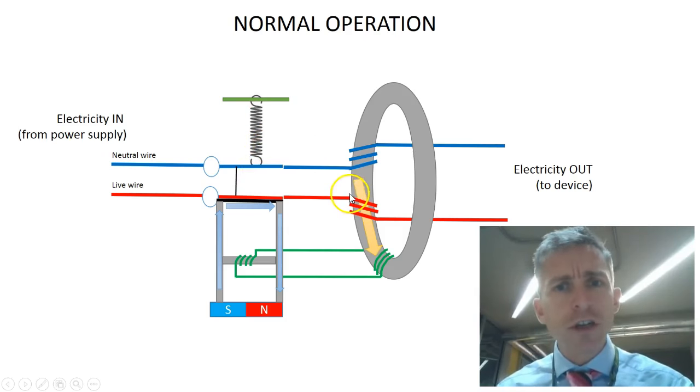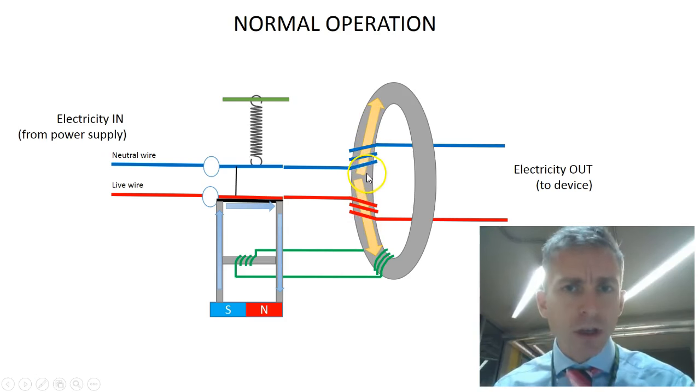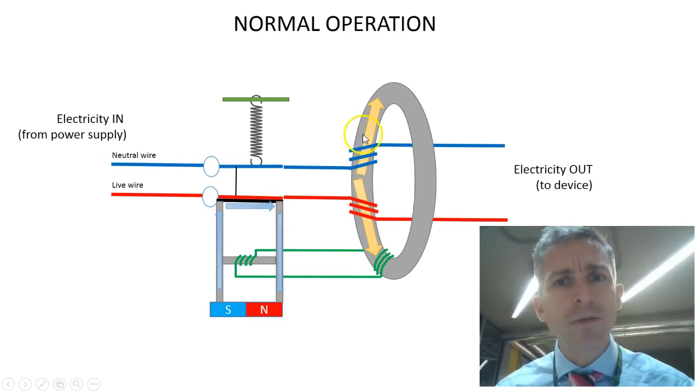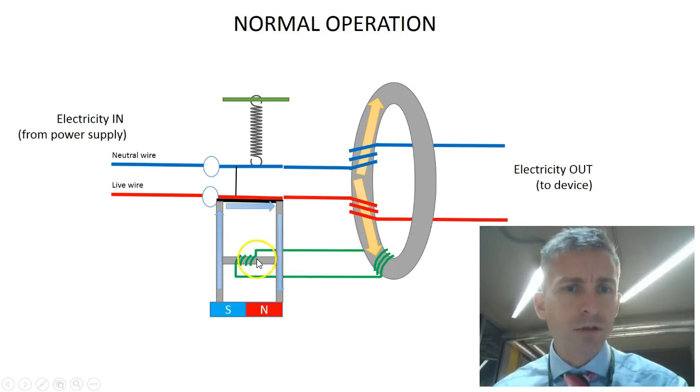In normal operation, the live current is the same as the neutral current. And so the two magnetic fields which these coils produce are equal and opposite, and they cancel each other out. That means that there is no net magnetic field produced inside the green search coil, and so no current will be induced in it and so no electricity flows through this coil here.